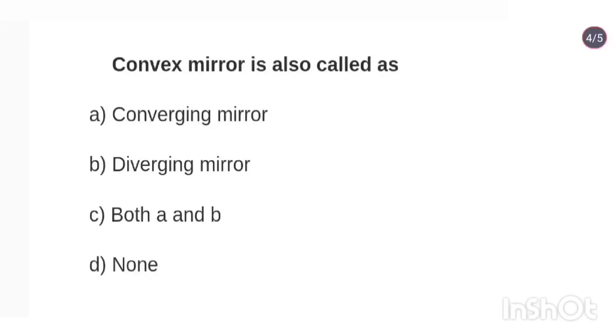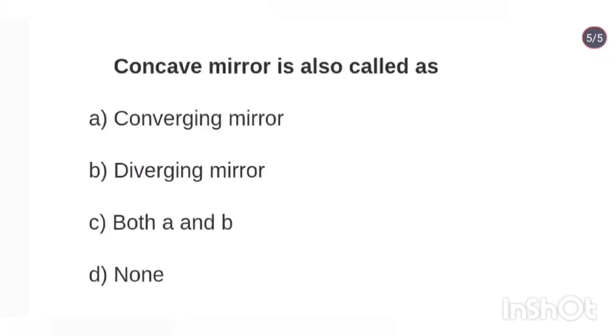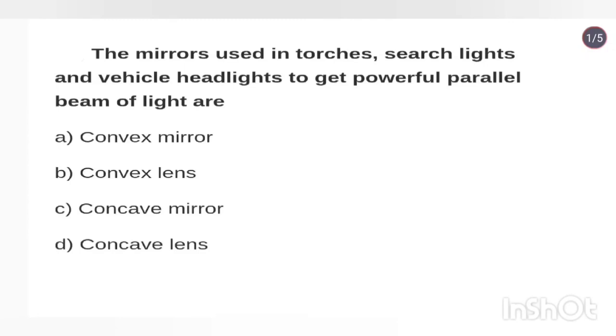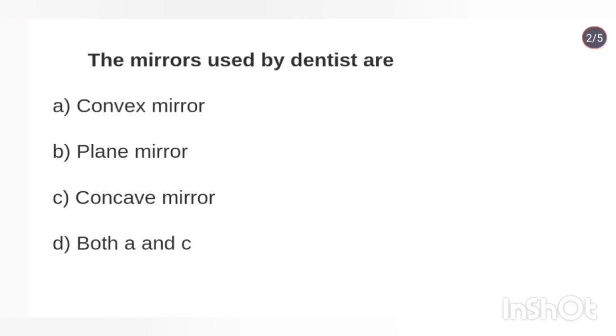Convex mirror is also called diverging mirror. Concave mirror is also called converging mirror. The mirrors used in torches, searchlights, and vehicle headlights to get powerful parallel beams of light are concave mirrors. Concave mirrors are used in searchlights and torches so that we have a more focused light beam which will not diverge out and help in searching. The mirrors used by dentists are concave mirrors.